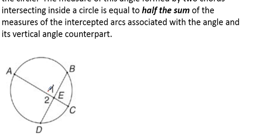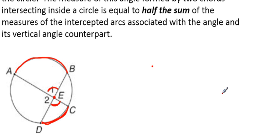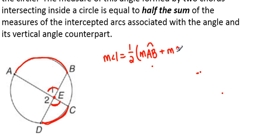If we want to find the measure of angle one, notice that its vertex is inside the circle, but unlike the central angle, its vertex is not at the center. Its measure is going to be formed by taking the sum of its intercepted arc — which goes from A to B — and the intercepted arc of its vertical angle, which is the arc from C to D. So the measure of angle one equals half of the sum of arc AB plus arc CD.